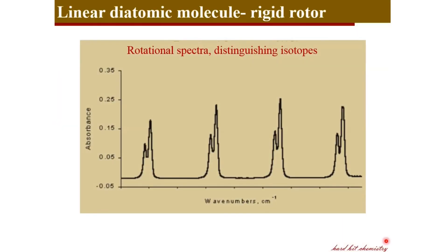We can also distinguish isotopes using the rotational spectrum. Hydrogen chloride has two chlorine isotopes: for H³⁷Cl the masses are 1 and 37, whereas for H³⁵Cl the masses are 1 and 35. This difference is reflected in the moment of inertia I, which in turn affects the rotational constant B and the energy differences. As a result, the two isotopes produce slightly different spectra, allowing us to detect the presence of isotopes and even determine their isotopic abundance from the rotational spectrum.